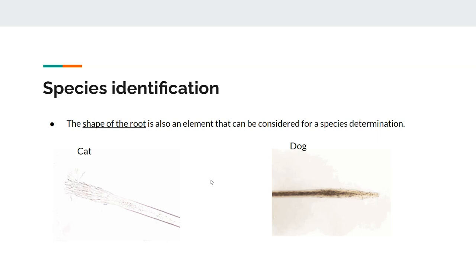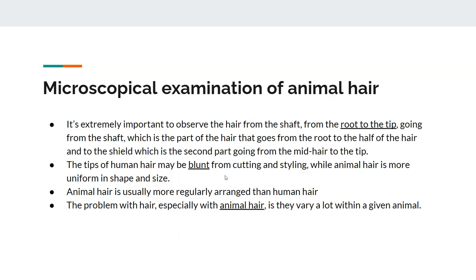Looking at the root of the hair, you can take a guess at the species. Cats have a characteristic paintbrush bristle-shaped root and dogs have a shovel-shaped root. When examining animal hair, it's very important to examine the whole hair from root to tip. Tips of human hair are blunt from cutting and styling. Animal hair is more likely to be uniform in shape and size and more regularly arranged, but in a given animal sample they vary a lot, so you need a large sample size for a good comparison.